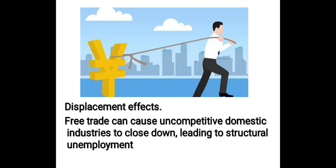Displacement effects: Free trade can cause uncompetitive domestic industries to close down, leading to structural unemployment. The problem with free trade is that there are many winners, but the losers do not gain any compensation. However, free market economists may counter that some degree of creative destruction is inevitable in an economy, and we can't turn back to a static closed economy. On the upside, if uncompetitive firms close down, ultimately new jobs will be created in different industries.